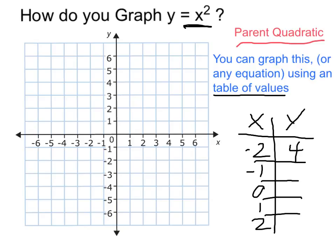If x is negative 1, y is negative 1 squared, negative 1 times negative 1, which is a positive 1, and so on.